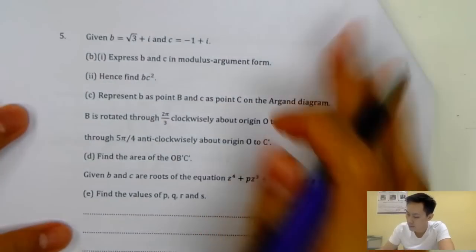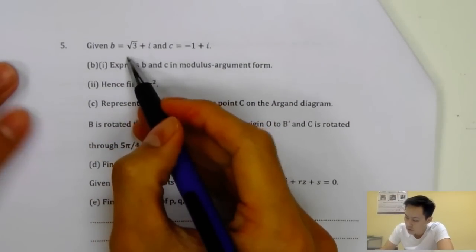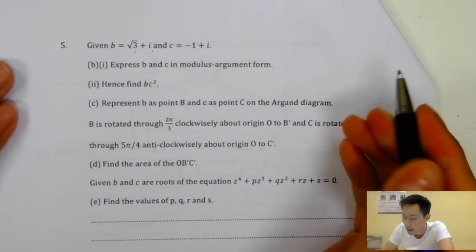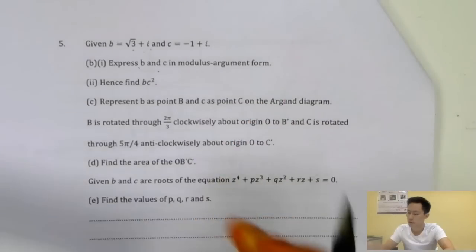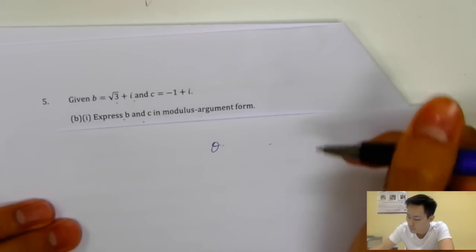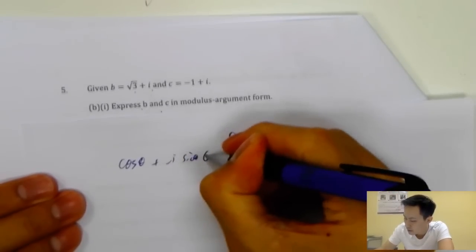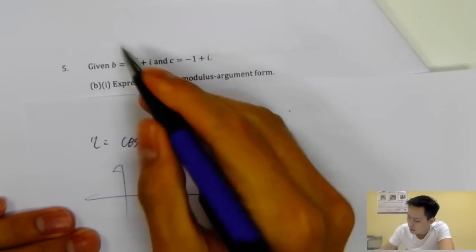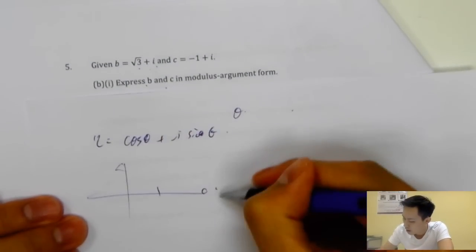The next topic is complex numbers. Given that B equals root three plus i, and C equals minus one plus i, express B and C in modulus-argument form. That means you need to find theta, expressing them as r times (cosine theta plus i sine theta).